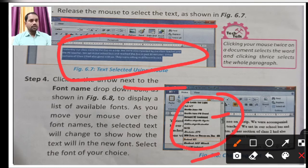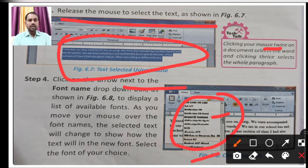Tech Talk tip: click the mouse twice on a document to select a word; click thrice to select the whole paragraph. Double-click with the left mouse button on a word to select it. Triple-click — pressing the left mouse button three times in quick succession — selects the entire paragraph. If you want to select the entire document, use Ctrl+A, which is the shortcut for Select All.